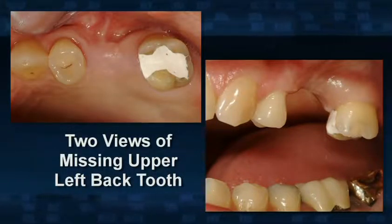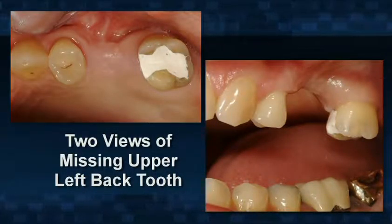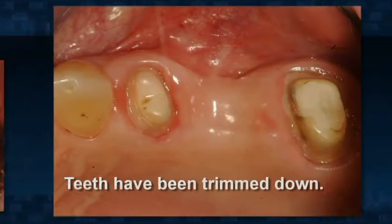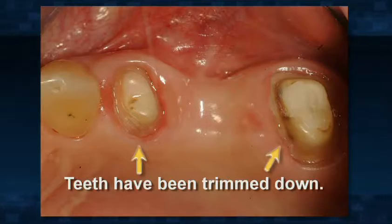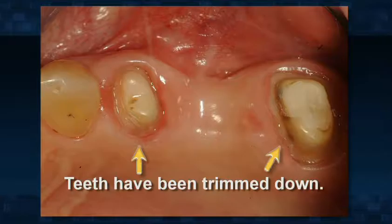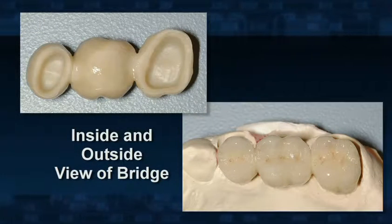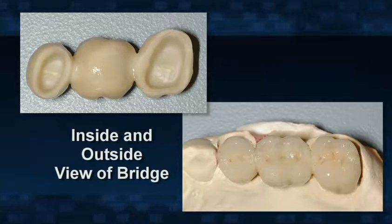If you have enough natural teeth remaining, fixed bridges connected to and supported by natural teeth are an excellent alternative. Most people feel like they are just natural teeth when completed. You can observe a missing tooth on the patient's upper left side — the teeth planned to support the fixed partial denture have been trimmed down to provide enough space to receive crowns or caps while still looking like natural teeth.